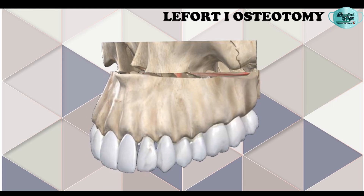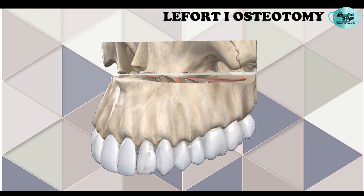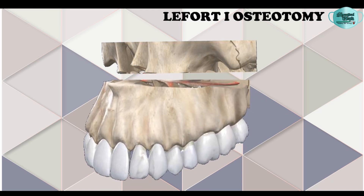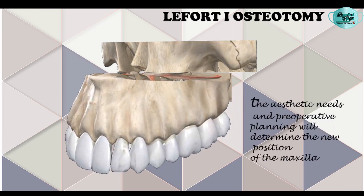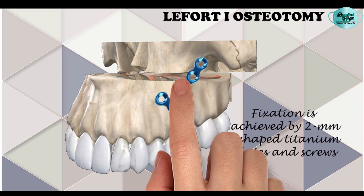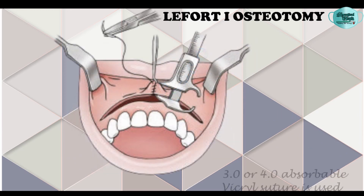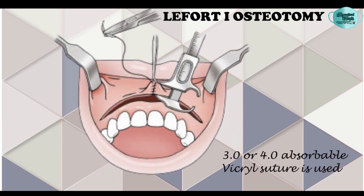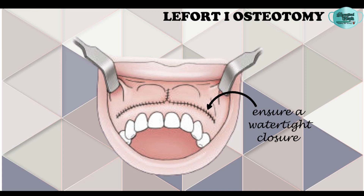After the downward fracture, the maxilla is free and soft tissues are stretched to allow a greater range of motion. The maxilla is then repositioned in the pre-operatively planned position and fixed with 2 mm L-shaped titanium plates and screws, one on each side of the maxillary buttress for stability. The mucosa is then closed and sutured with 3-0 or 4-0 absorbable Vicryl suture to achieve watertight closure.